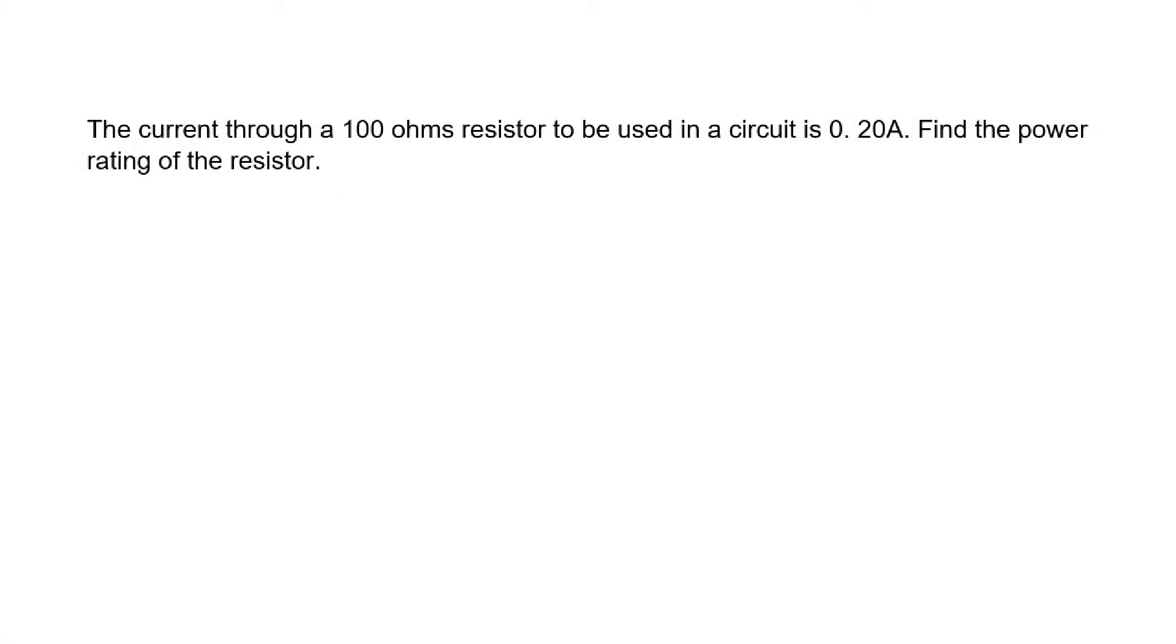The current through a 100 ohms resistor to be used in a circuit is 0.20 amperes.